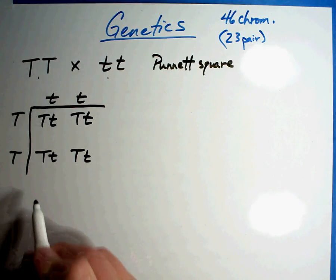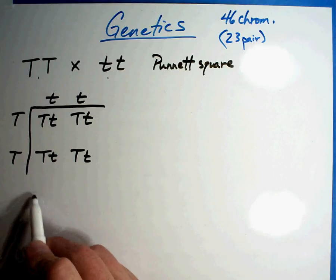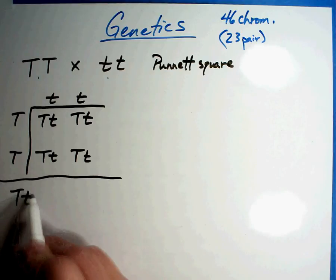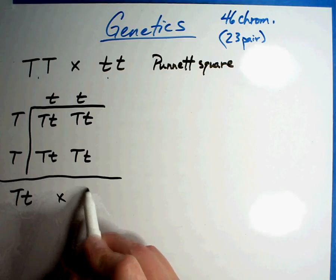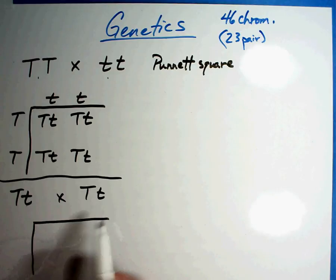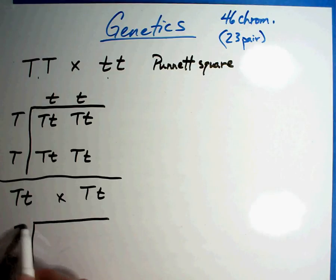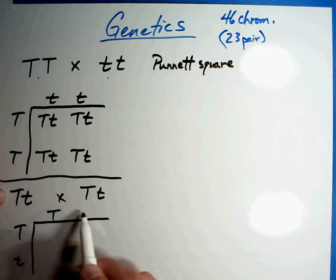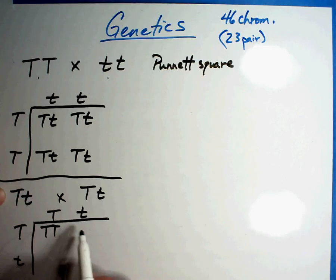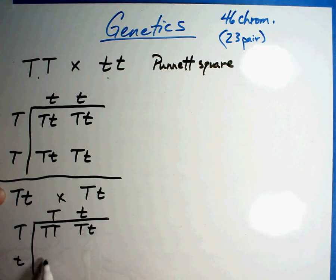Let's try another one real quick. Let's say we have this parent crossed with this parent. The Punnett square shows the first parent can only give big T and little t, and so can the other one. So the possible children are: big T big T, big T little t, big T little t, little t little t.